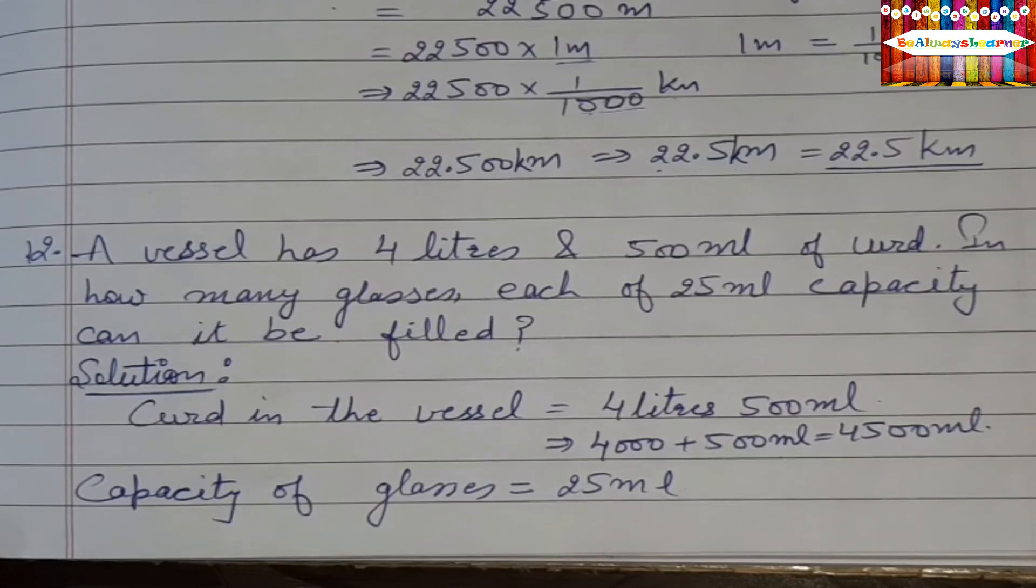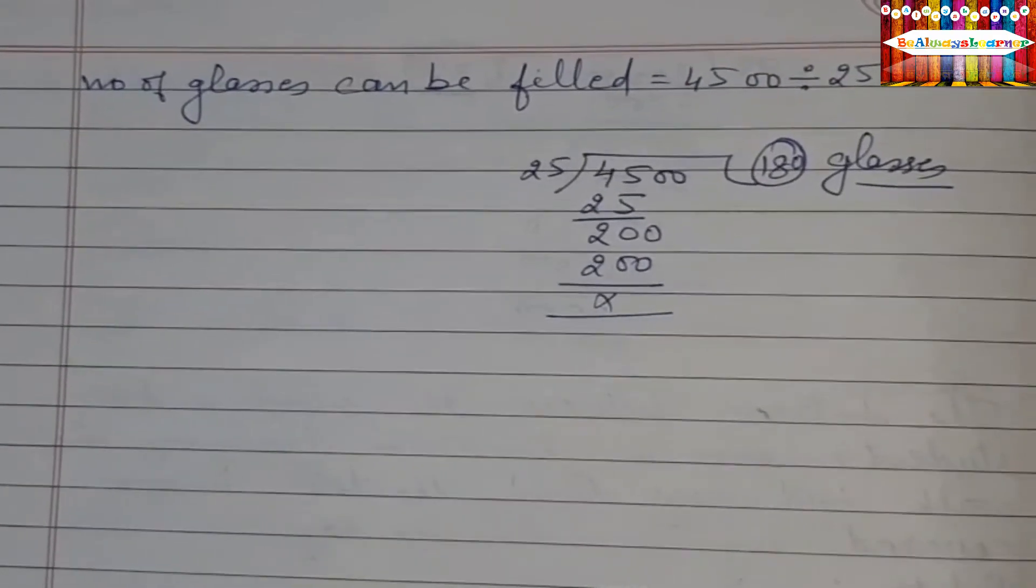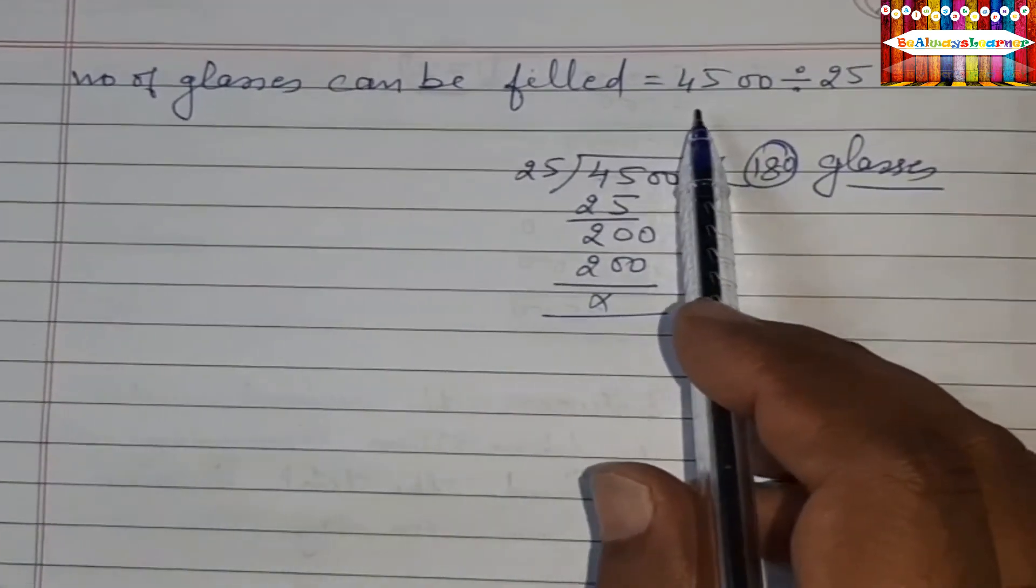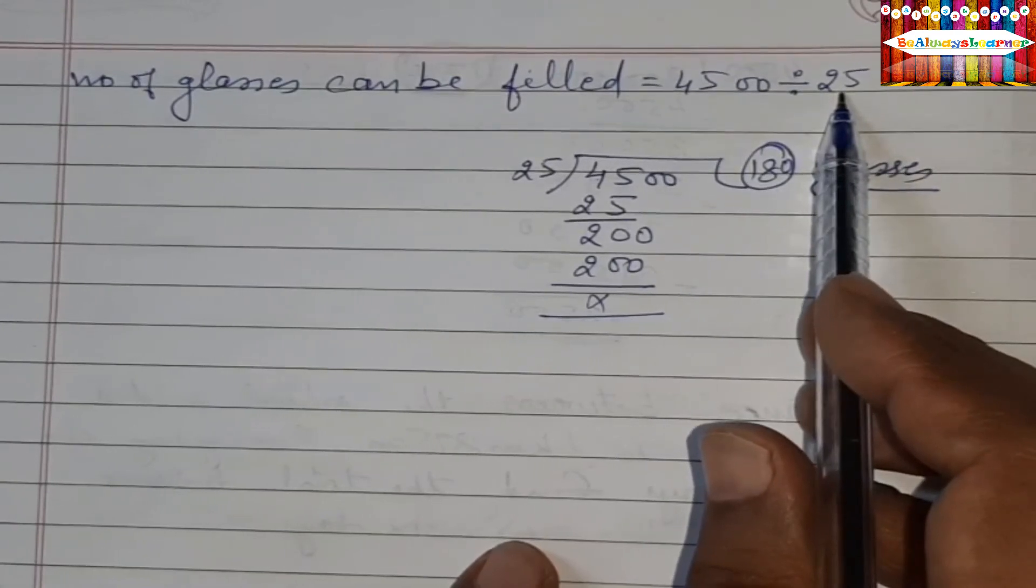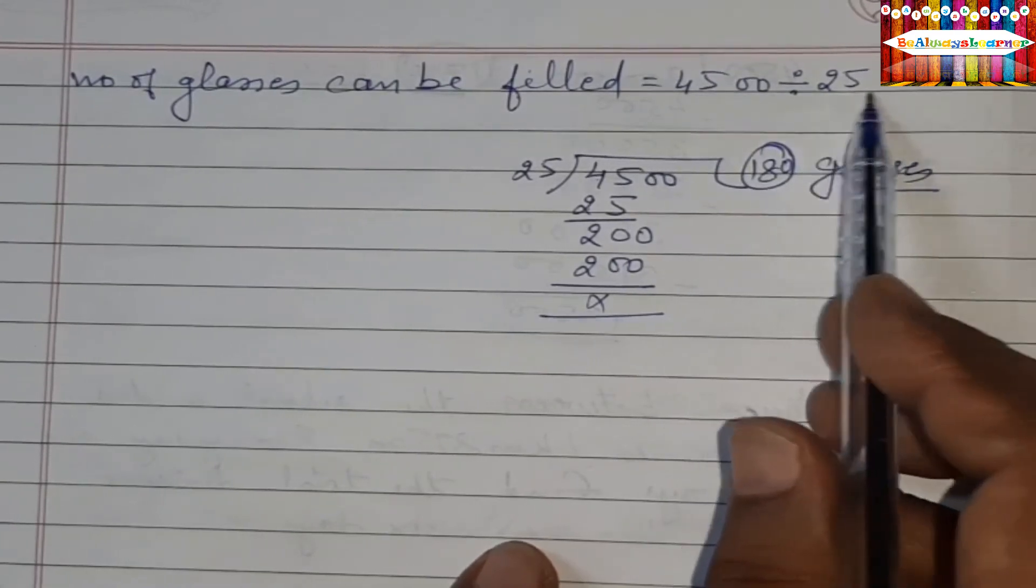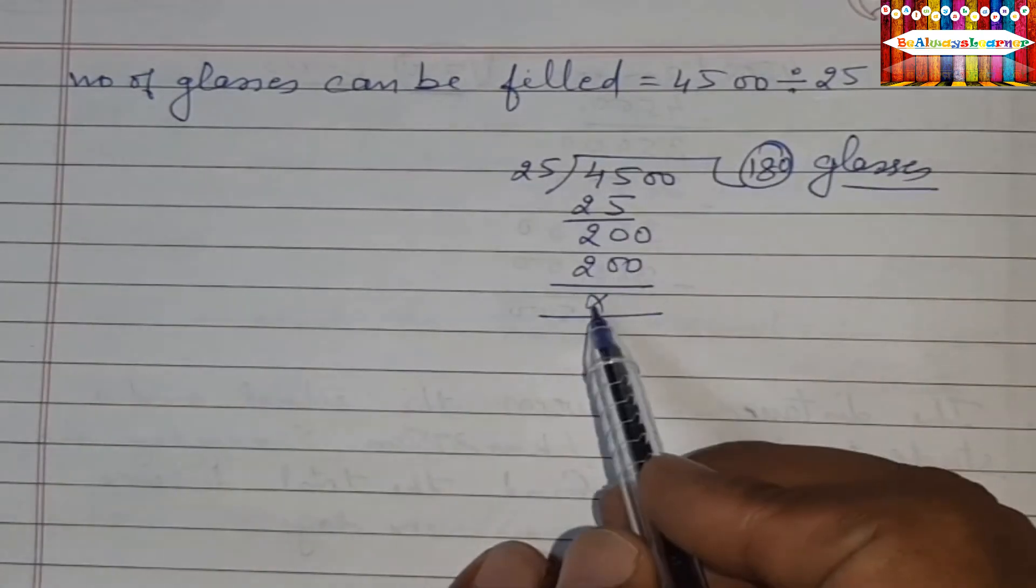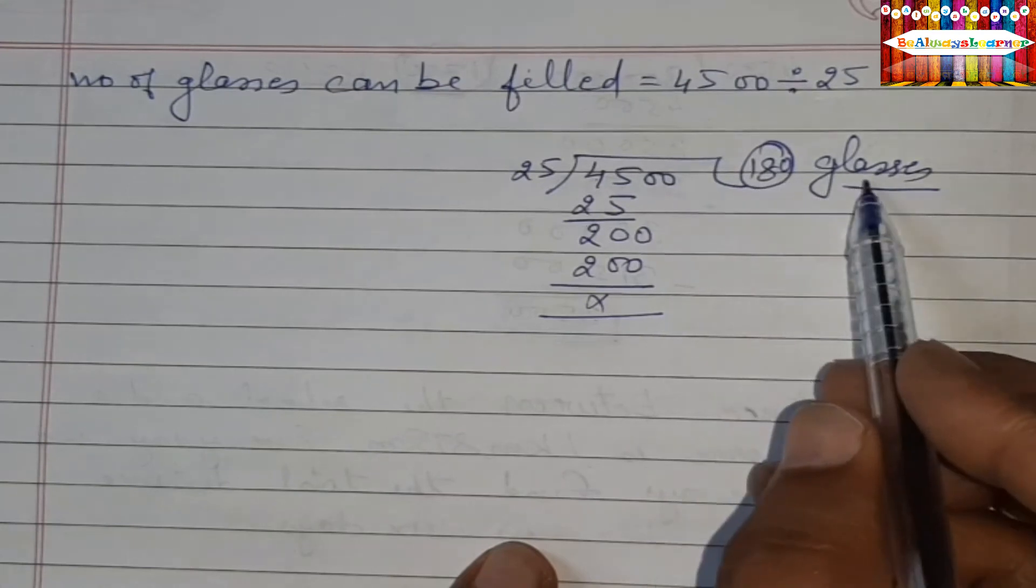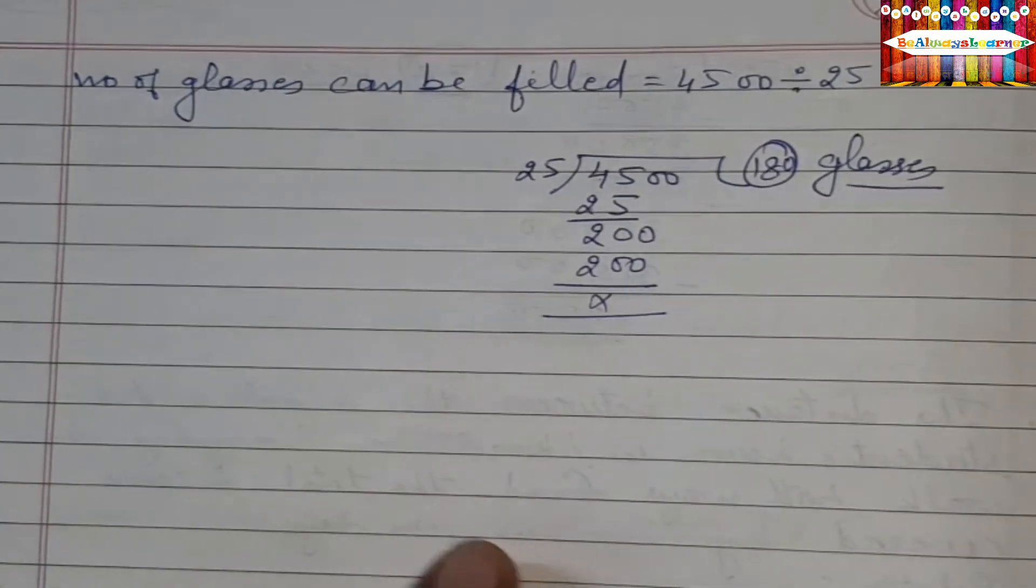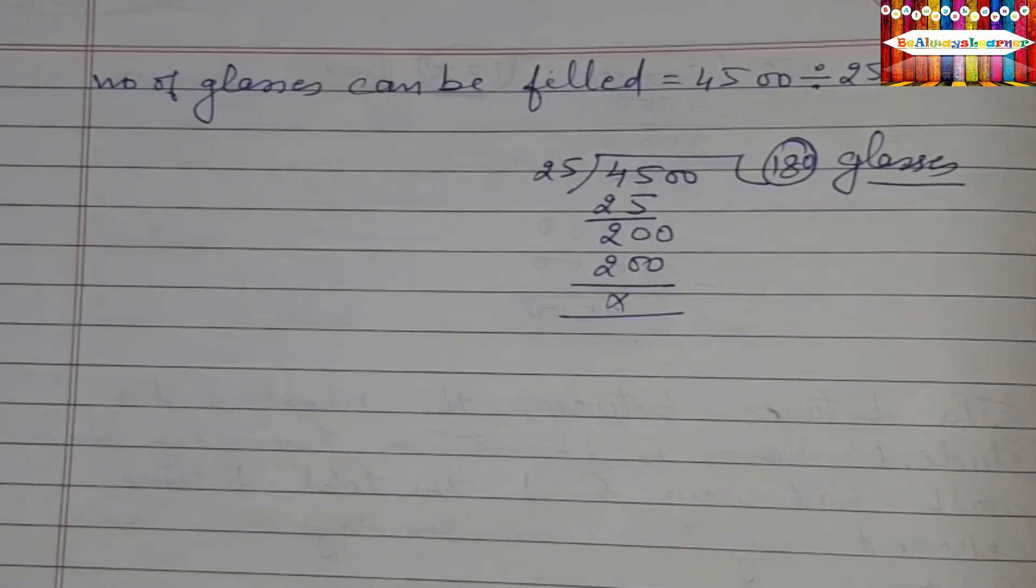So number of glasses can be filled is equal to the total ml divided by the glass capacity. So we divide by 25 ml. We have not shown rough work, but we divide it, so we'll get 180 glasses. So 180 glasses will be filled of each glass of 25 ml.